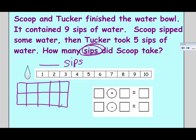In my problem, the bowl started out full. So I really believe that nine is my whole. I know the bowl had nine sips in it, and I'm going to draw circles in there to represent the sips in the bowl. I like using a ten frame because I know that nine is one less than ten, so I should have one empty spot.